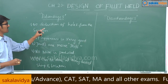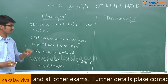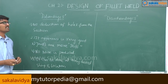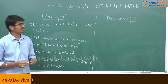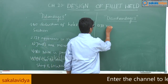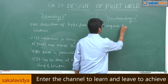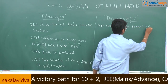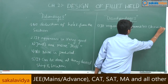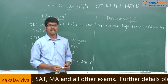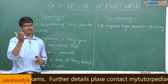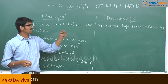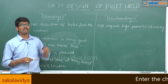So the advantages of weld connections are: no deduction of holes from the section, appearance is very good, joints are more stiff, no noise is produced, and it can be done at any desired shape and location. Now for disadvantages — the first is that it requires a huge amount of electricity or current, whereas for rivets and bolts, you can directly use your hands.